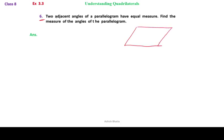Now what is said is that two adjacent angles have equal measure. So let us say it's a parallelogram ABCD, and two adjacent angles have equal measure. That means, according to the question, angle A equals to angle B. And let us assume that the value is x.